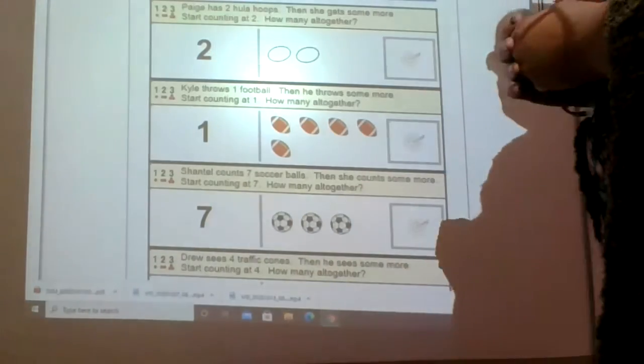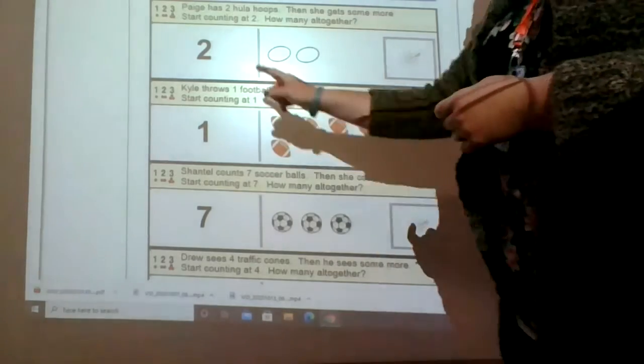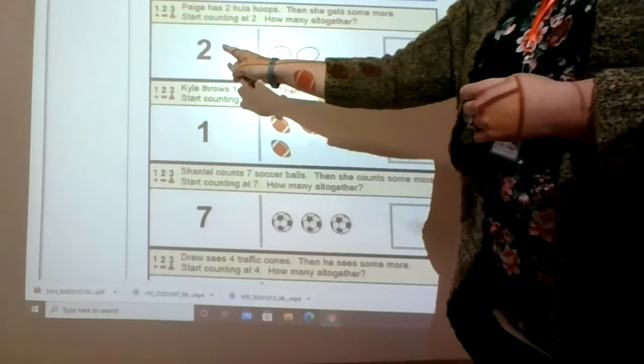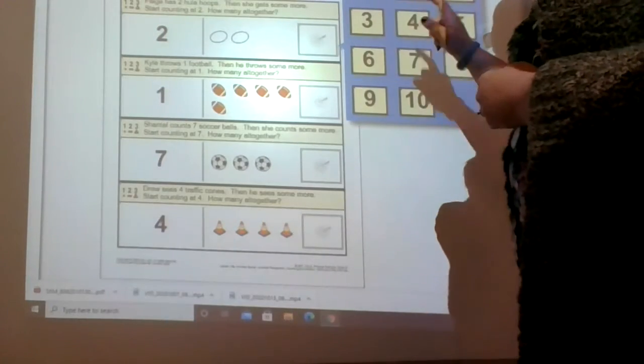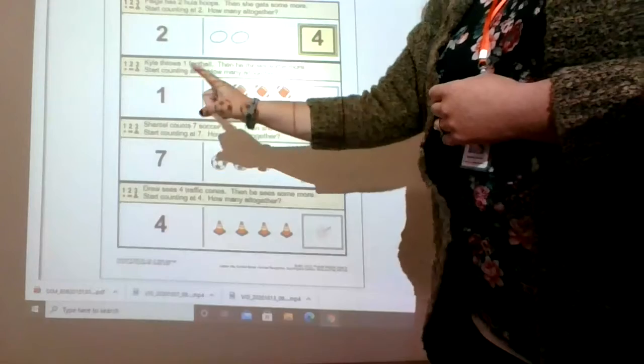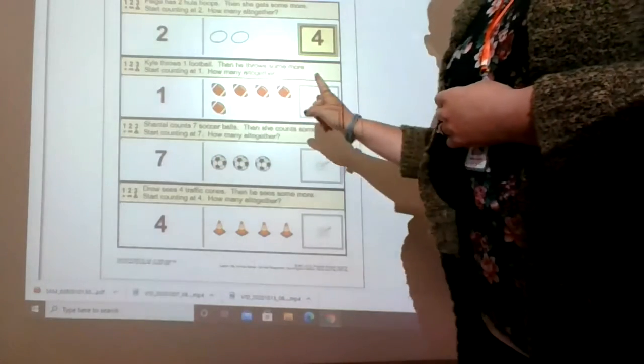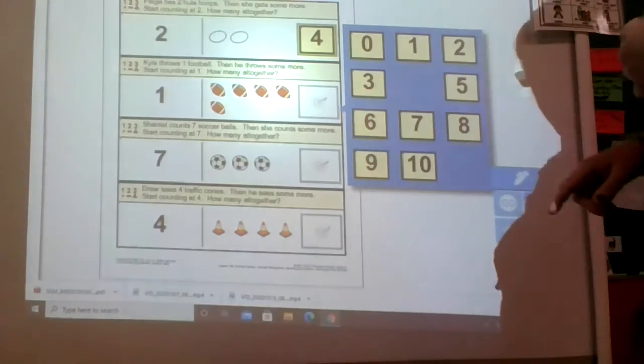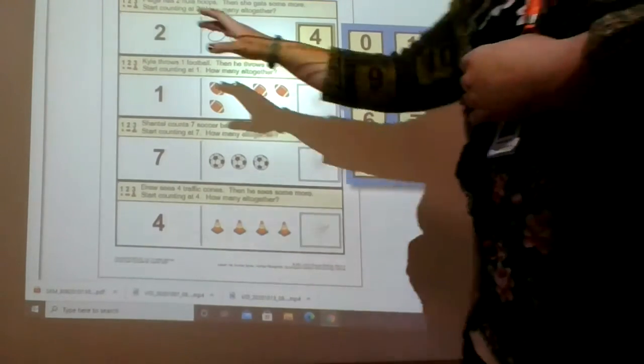Page has two hula hoops. Then she gets some more. Start counting at two. So you start counting at this number. Two, three, four. And select four. Do the same here. One, two, three, four, five, six. Find the six. There's only one page here. So that is your activities today.